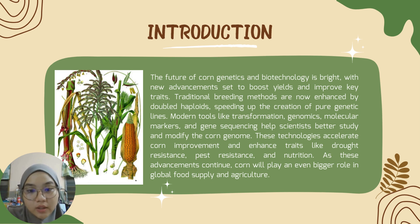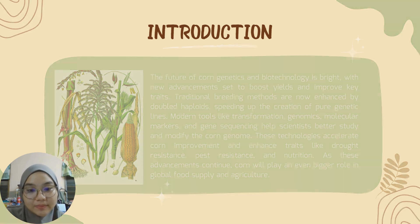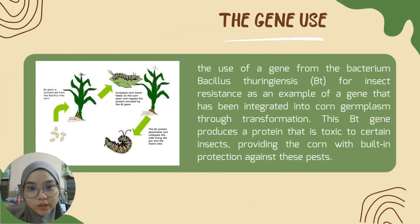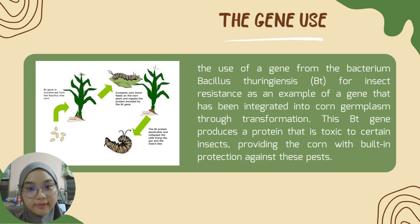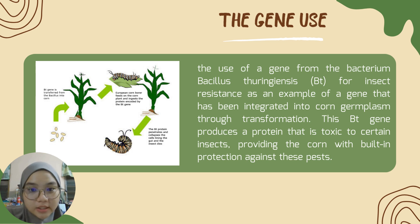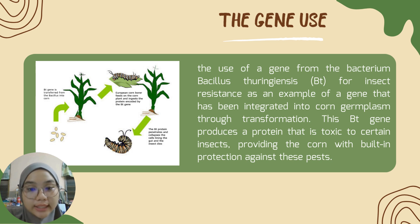As these advancements continue, corn will play an ever bigger role in global food supply and agriculture. The use of a gene from Bt bacteria for insect resistance is an example of a gene that has been integrated into the corn genome through transformation. This Bt gene produces a protein that is toxic to certain insects, providing the corn with built-in protection against these pests.